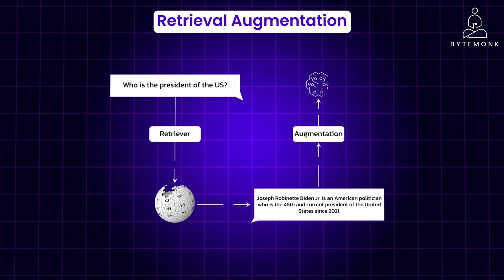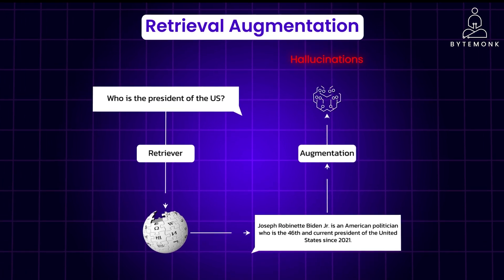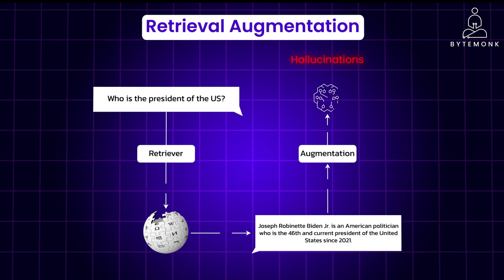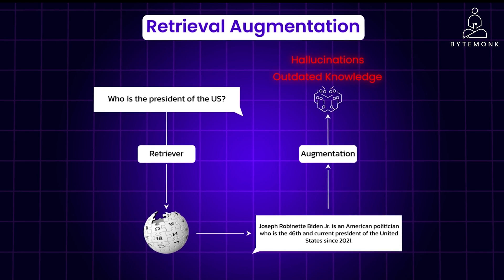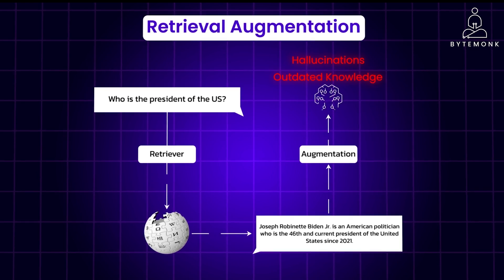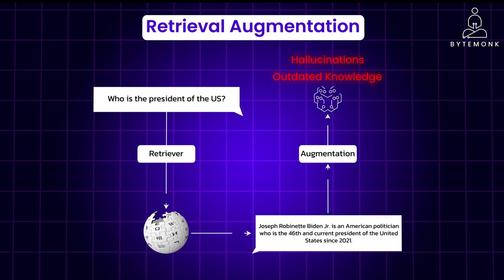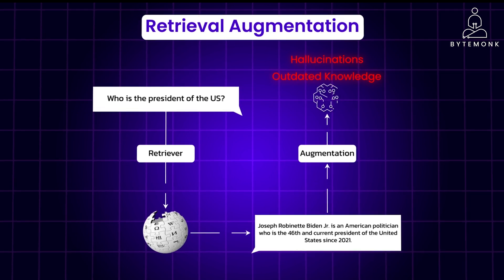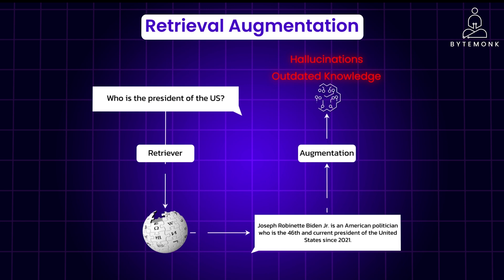LLMs are incredible at generating text, but they have limitations mainly around hallucinations — fabricating information that sounds plausible but isn't true — or outdated knowledge, meaning they don't know about events after their training data cut-off. RAG addresses these problems by connecting the LLM to a wider world of information, mitigating hallucinations by introducing factual context, and overcoming knowledge cut-offs by incorporating up-to-date information.